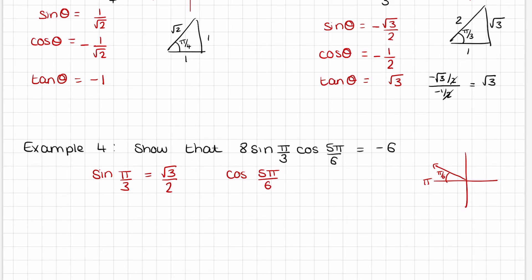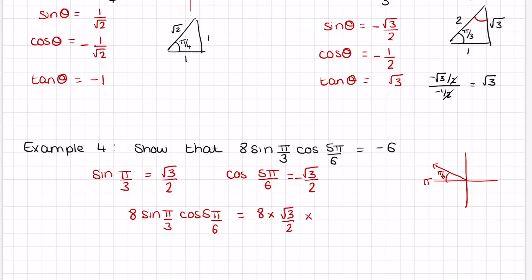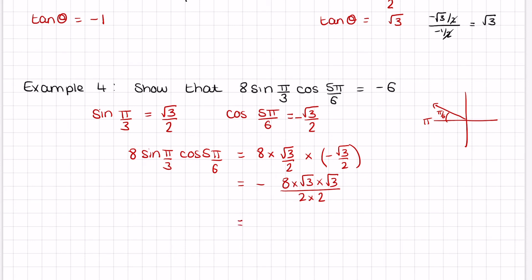Substituting into the equation: 8 × sin(π/3) × cos(5π/6) = 8 × (√3/2) × (−√3/2). There is only one negative, so the answer is negative. This gives −8 × (√3 × √3) / (2 × 2) = −8 × 3/4 = −24/4 = −6.